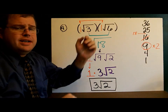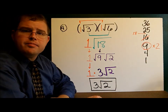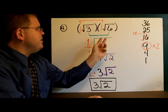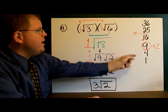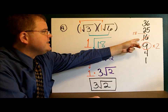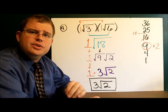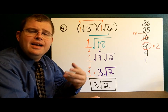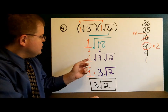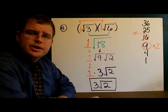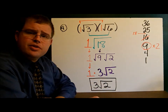Example 4: we have the square root of 3 times the square root of 6. Again, if there's no number written in front, it's automatically a 1. So we have 1 times 1, which is 1. The radicands are 3 times 6, which is 18, so we have 1 square root of 18. Let's simplify: using my list of perfect squares, 9 goes into 18 two times, so I'll break down the square root of 18 into the square root of 9 and the square root of 2. The square root of 9 is 3, and the square root of 2 doesn't simplify. So I have 1 times 3, which is 3 square roots of 2.